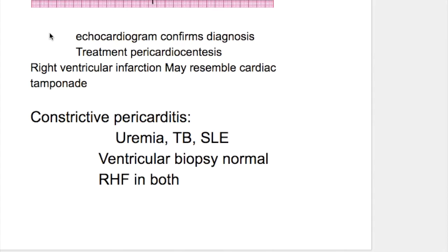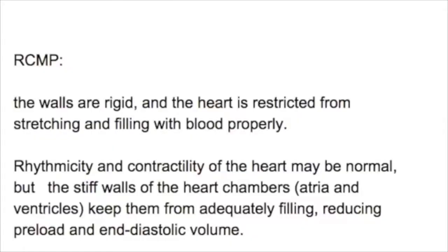How is the diagnosis of cardiac tamponade made? Echocardiogram confirms the diagnosis and the treatment is pericardiocentesis. Right ventricular infarction may resemble cardiac tamponade. The third condition producing low voltage ECG is restrictive cardiomyopathy.